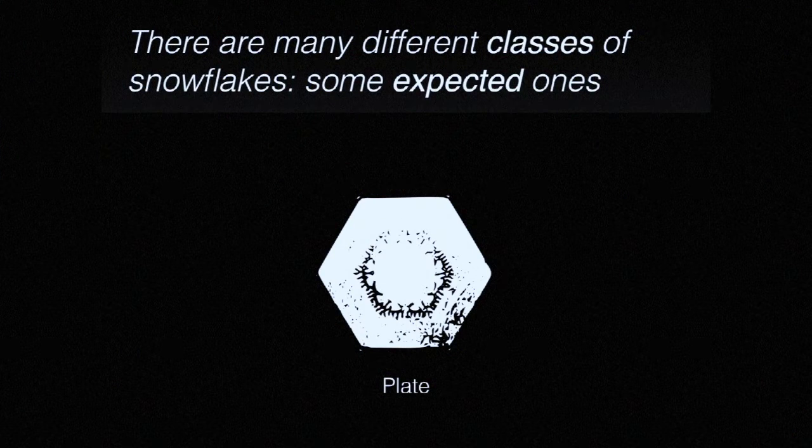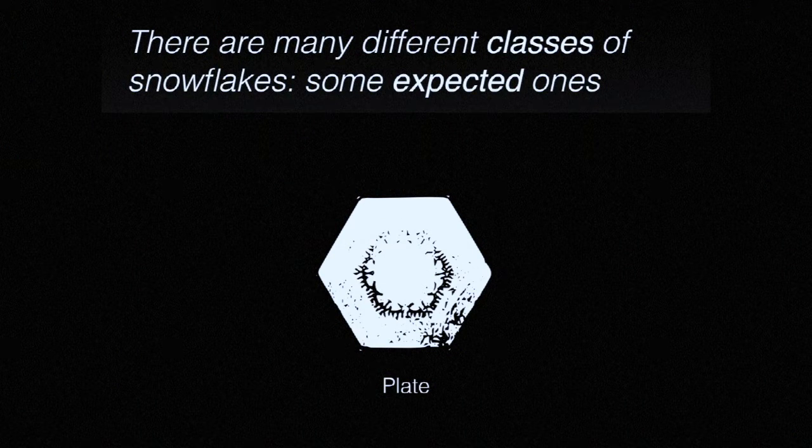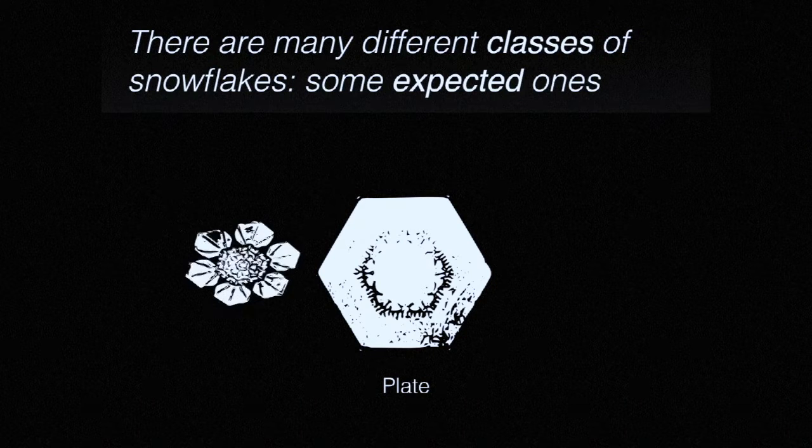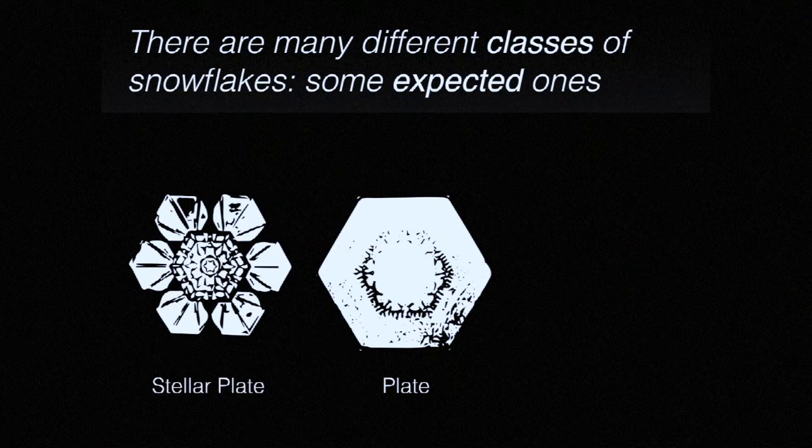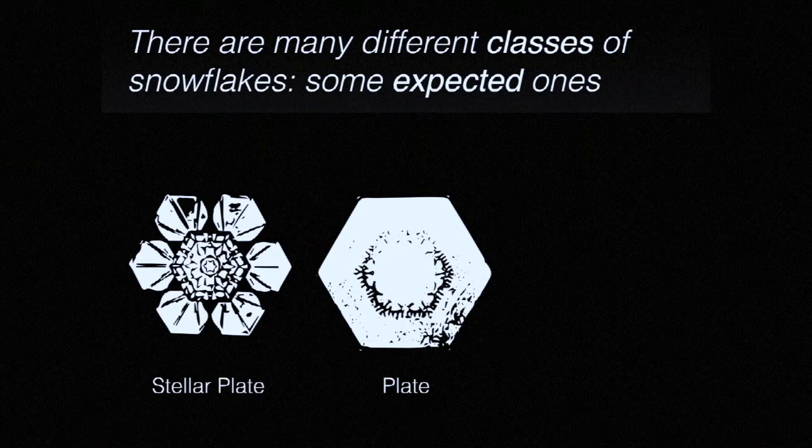For example, the simplest snowflake you might see is a plate snowflake. This just looks like a little hexagon that grows out with six sides and six points. A little bit more interesting is a stellar plate. You can actually have a plate in the middle, and then additional plates grow out on the tips of that particular snowflake.